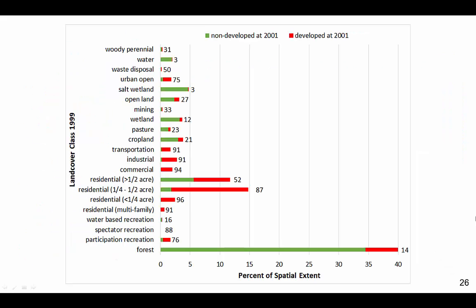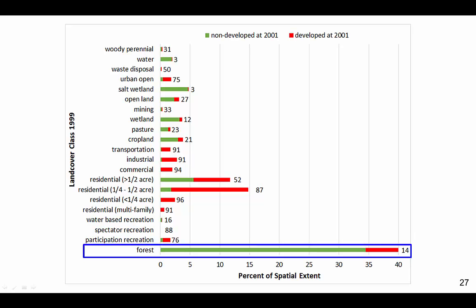This figure derives from a comparison between the categories of the driver image and the beginning land use image. The total length of each stacked bar is the size of each driver category. The portion of the bar that is red is in the developed state at 2001. The numbers to the right of the red portion give the percent of the category that is developed at 2001. The empirical probability for each category is a ratio where the numerator is the length of the red portion of the bar and the denominator is the length of the entire stacked bar. For example, 14% of forest at 1999 was in a developed state at 2001, and thus forest has a suitability value of 14.